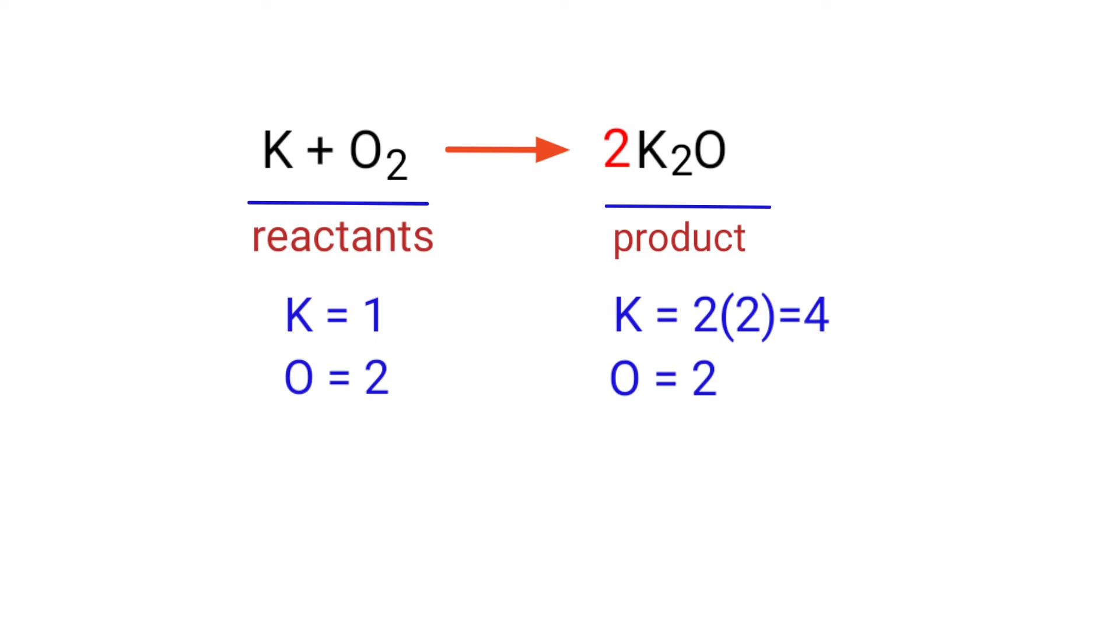Now we need to balance the potassium atoms. To do this we need to put a coefficient of four in front of K. The equation is now balanced. There are four potassium atoms and two oxygen atoms on both sides.